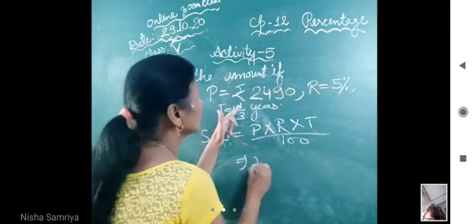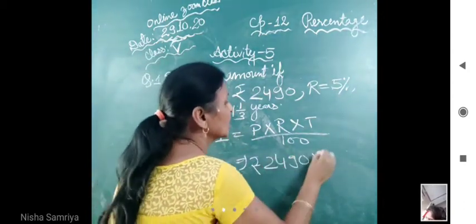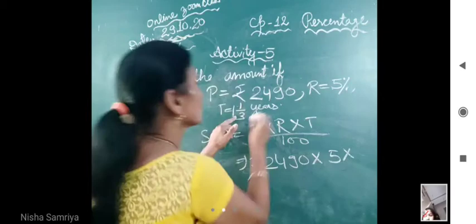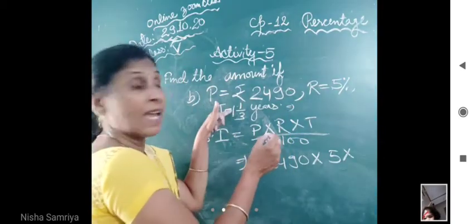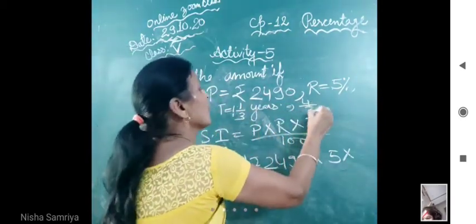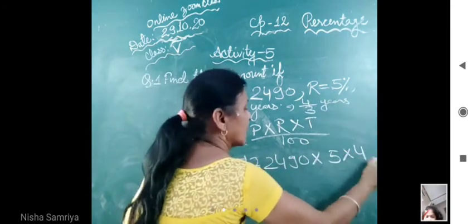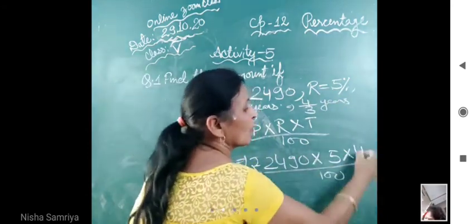Now we substitute the values, that is 2490, 5 into T. Hamare isko open karenge. Toh kya hojayega? Yeh mixed me hai, islie ham improper me karenge. Toh yeh jayega 4 upon 3 years. Aur yeh gaye niche 4 upon 3.